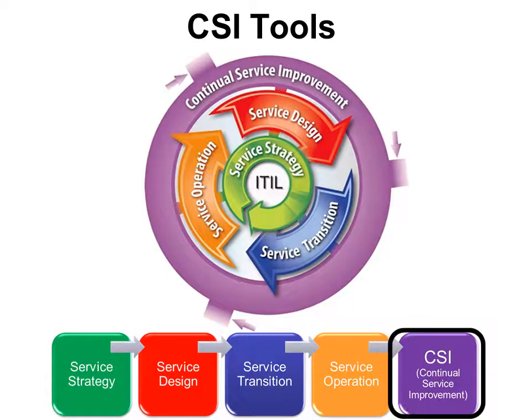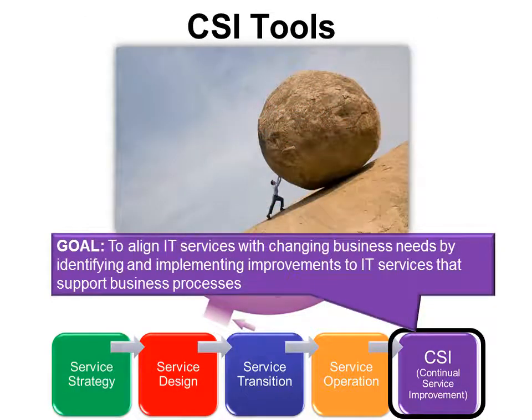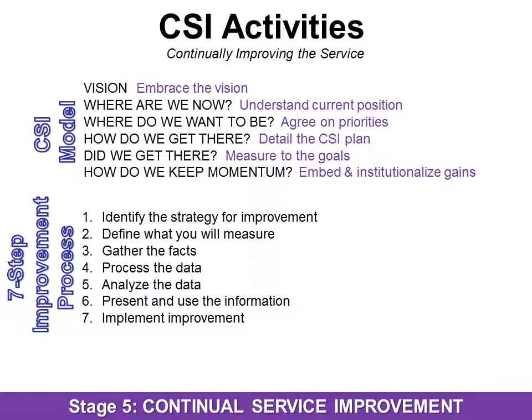That takes us to the fifth and final life cycle stage, called CSI, or Continual Service Improvement. The goal here is to align IT services with changing business needs by identifying and implementing improvements to IT services that support business processes. CSI activities include the CSI model and the seven-step improvement process.